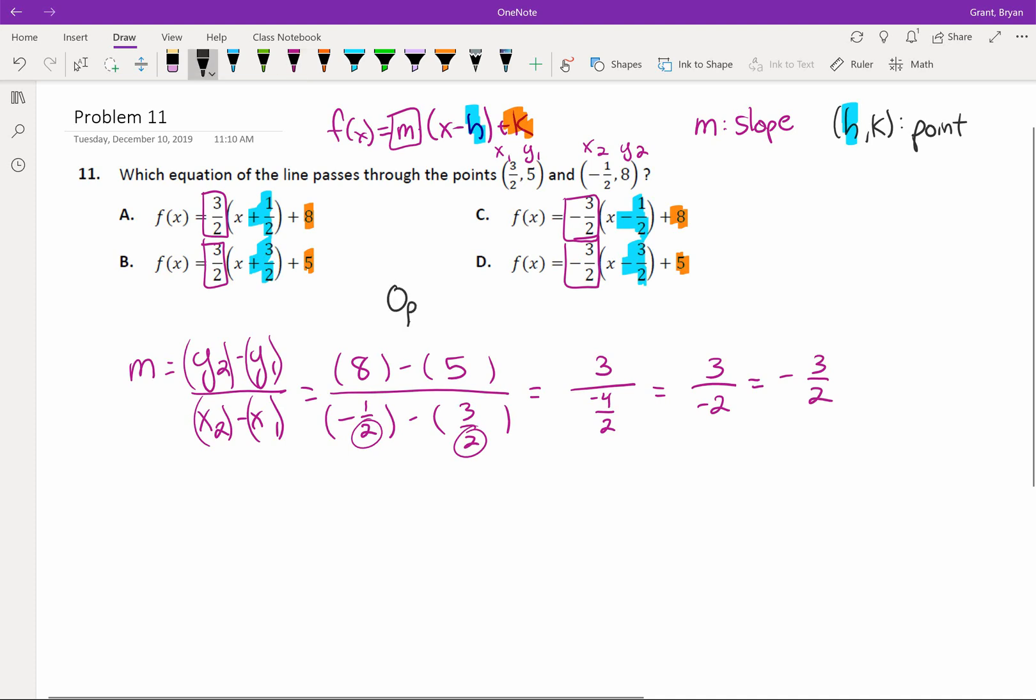So I'm going to take a quick second and label this as option one. So option one lets us eliminate two equations of our line, specifically a and b, because we know the slope has to be negative three halves, which is definitely c or d.